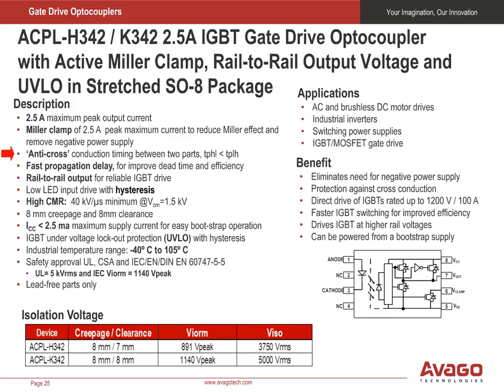Cross-conduction is prevented by measuring during production that TPHL is less than TPLH. The voltage and high-peak output current supplied by these optocouplers make them ideally suited for direct-driving IGBTs with ratings up to 1200 volts and 150 amps. For IGBTs with higher ratings, the ACPL-H342 or ACPL-K342 can be used to drive a discrete power stage. The ACPL-H342 and ACPL-K342 have the highest insulation voltage of VIORM equal to 891 volts peak and 1140 volts peak respectively in the IEC EN60747-5-5 standard.